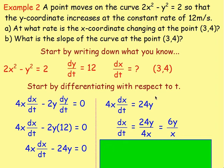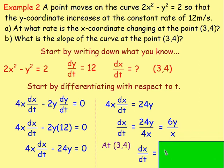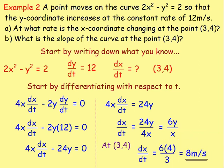Rearranging to find dx/dt: add 24y to both sides, giving 4x dx/dt = 24y, then divide both sides by 4x to get dx/dt = 6y/x. We know the point is (3, 4), so x = 3 and y = 4. Therefore dx/dt = 6 × 4 / 3 = 8 metres per second.